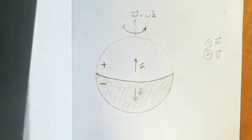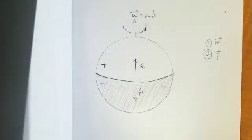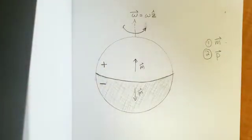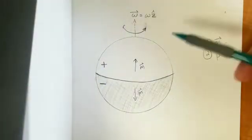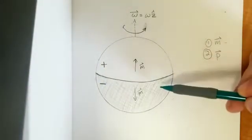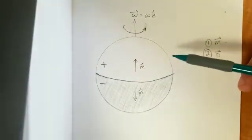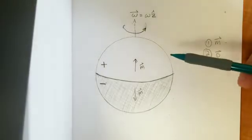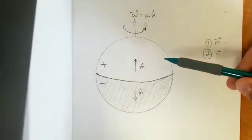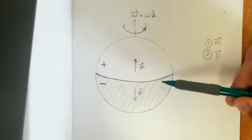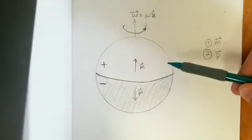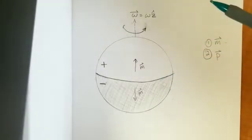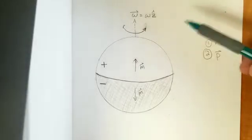Now for our electric dipole moment. We've already established that the magnetic moments for the top and bottom half of the sphere are in opposite directions, and therefore the top and bottom half of the sphere repel in terms of magnetic forces.